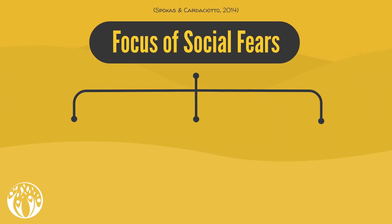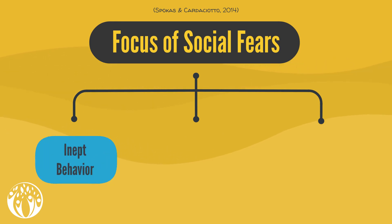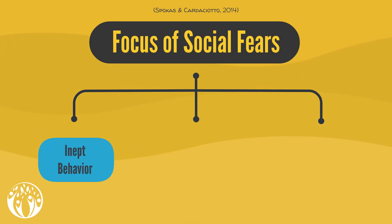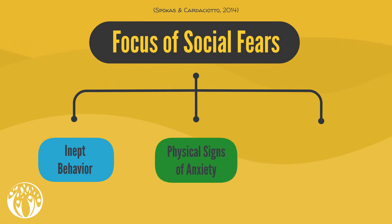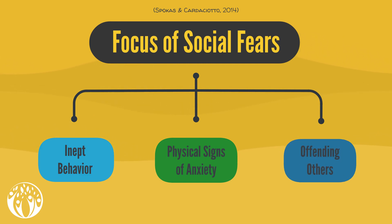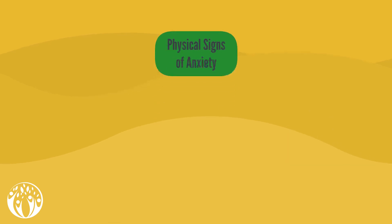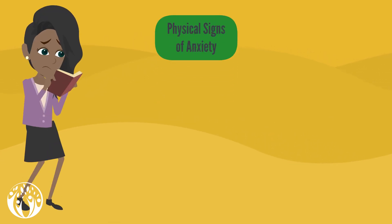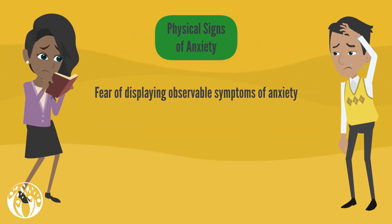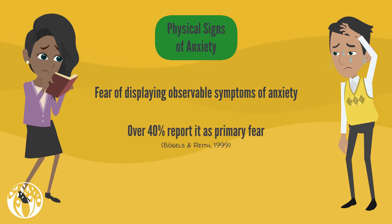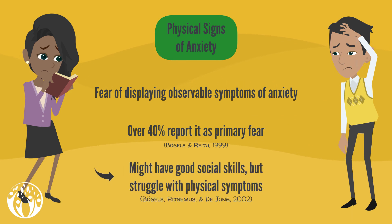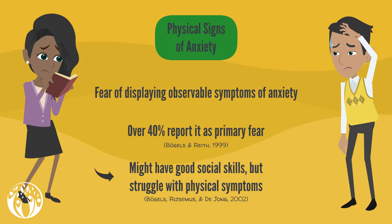Yet another way of distinguishing between individuals suffering from SAD is by looking at the focus of their social fears. Besides the obvious and most commonly mentioned fear of behaving in an inept and unacceptable fashion, there are two other subgroups that are crucial to keep in mind: the subgroup whose focus lies on the physical symptoms of anxiety, and the subgroup that is especially afraid of offending others. Those individuals who have their fear focused on the physical signs of anxiety are particularly afraid of displaying observable symptoms of anxiety. More than 40 percent of SAD sufferers report it as their primary fear. These people often have good social skills but simply struggle with the fear of displaying physical symptoms of anxiety.